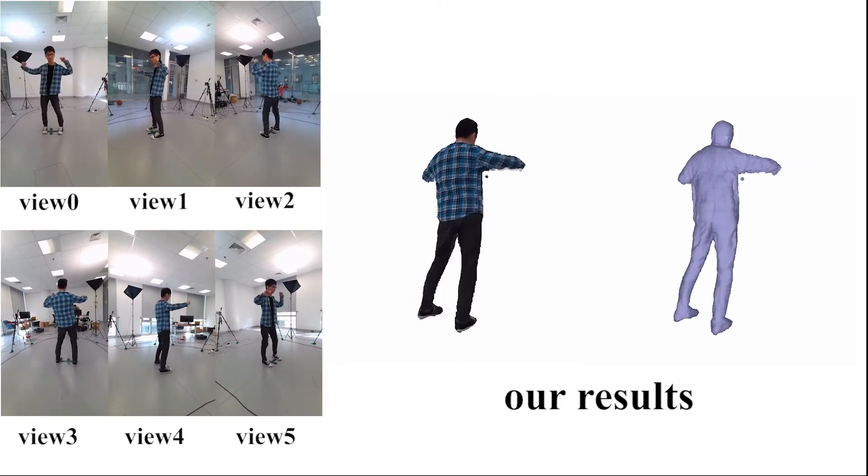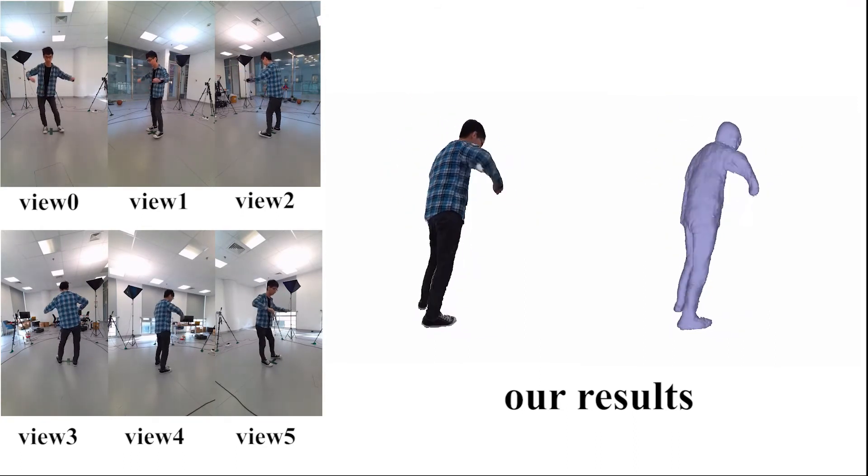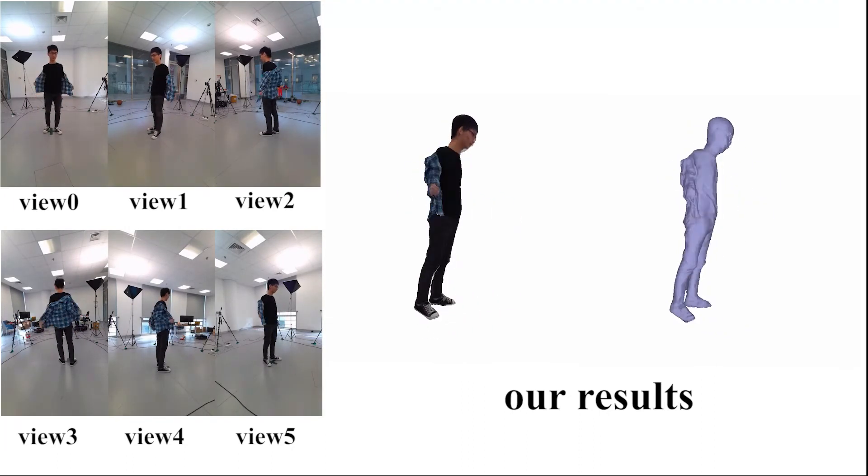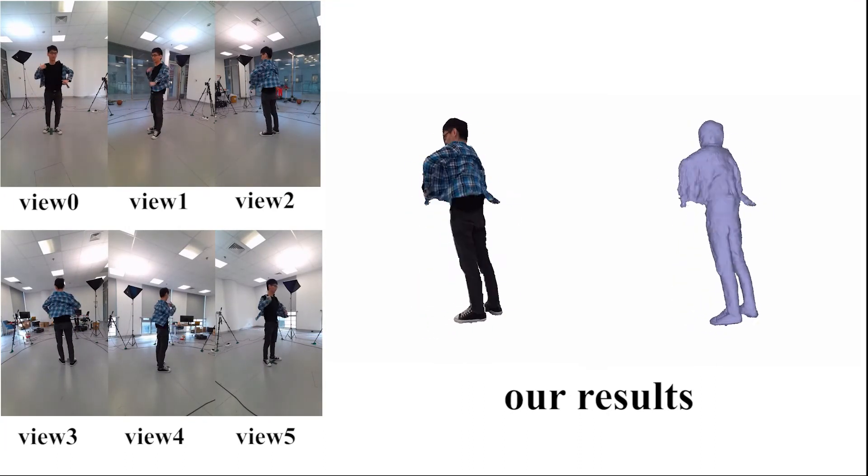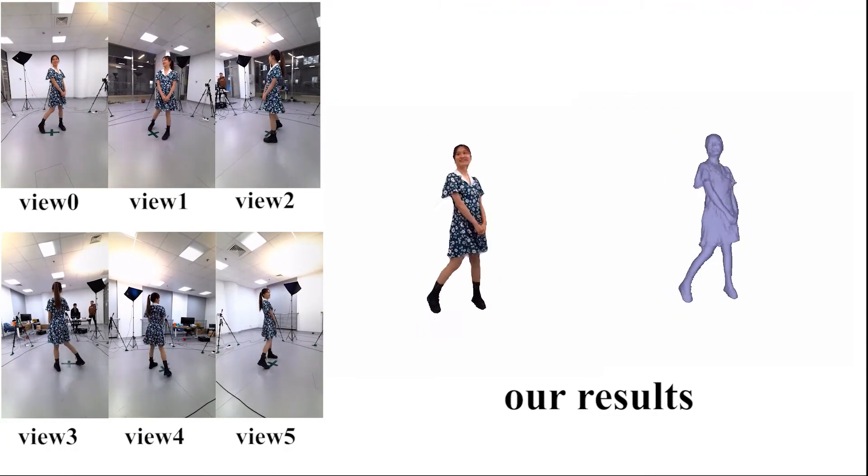Besides, our method can also better handle examples where people wear richly textured clothes, such as plaid shirts and floral skirts. It can also solve human-object interaction scenarios with topology changes, such as removing clothes or bags.